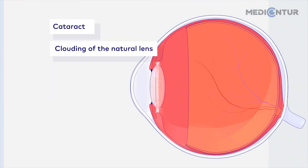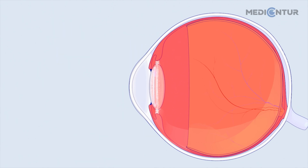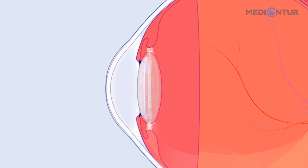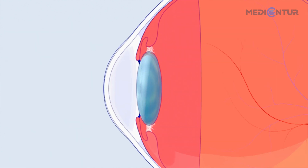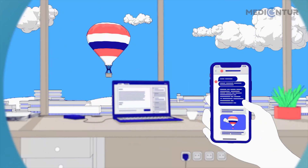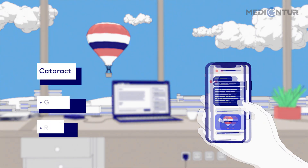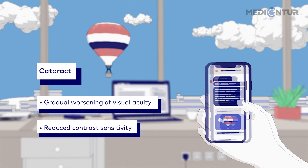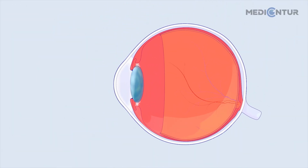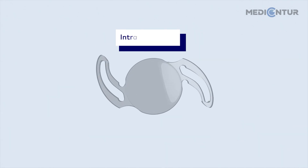Cataract is the most common cause of vision loss in the world. Metabolic changes in the crystalline lens lead to a gradual clouding, worsening as the condition develops. This eventually results in blurry or double vision, faded colors, and trouble seeing at night. The only available treatment to combat this condition is the insertion of an intraocular lens, otherwise known as IOL.